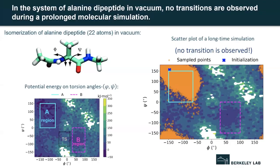We have two dot regions, A and B, which are considered as the metastable states and have lower energy compared to other areas. Between these two metastable states, there is the transition state. If we do a very long-term simulation starting from a configuration close to state A, we can see most of the configurations will stay close to state A, and we will not see any transition to state B.